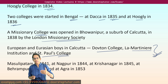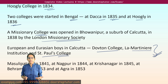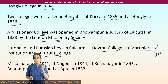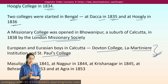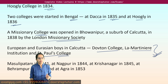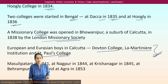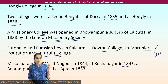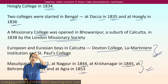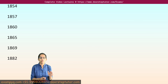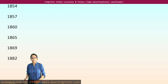Later on, with Wood's Dispatch which came into existence, there were a series of colleges established which were highly different from the present-day colleges. For example, there was a college at Masulipatnam in 1841, Nagpur in 1884, Krishnanagar in 1845, Behrampore in 1853, and Agra again in 1853. All these colleges established during the 1800s were under Wood's Dispatch but were significantly different from the existing series of colleges.